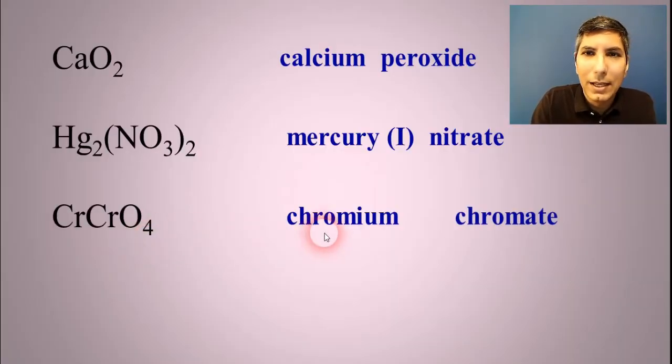Chromium, we're going to need a Roman numeral here. And it doesn't look like anything's been swapped. So we have to assume that the charges have canceled out. So if chromate is a minus two, then this chromium has to be a plus two. So it's chromium(II) chromate. Kind of a tricky one there.